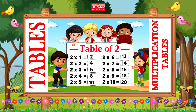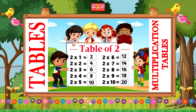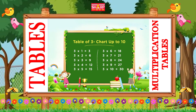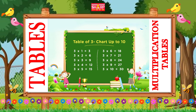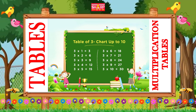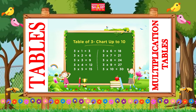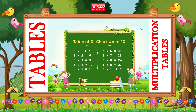Two tens are twenty. Table of three. Three ones are three, three twos are six, three threes are nine.